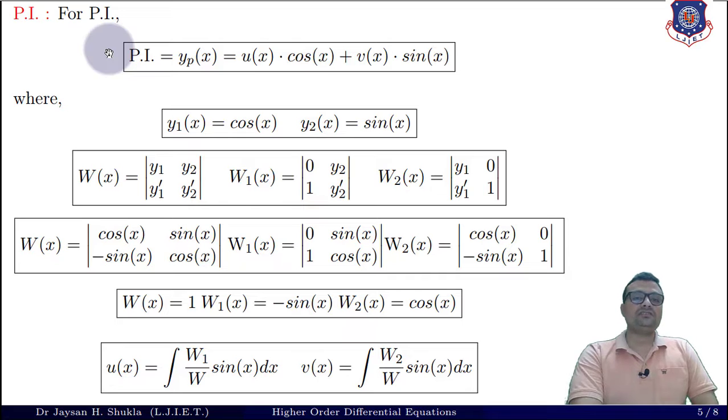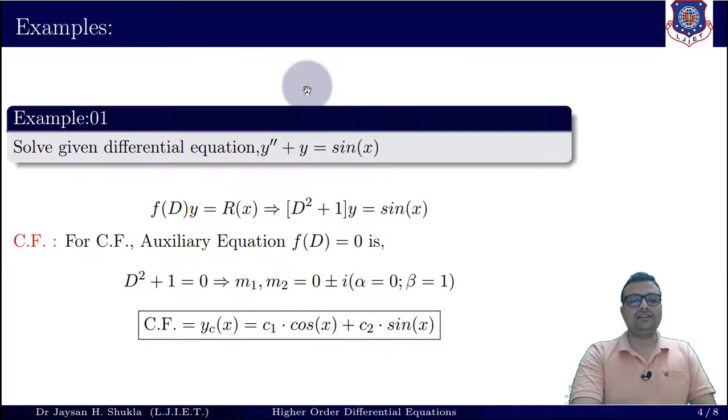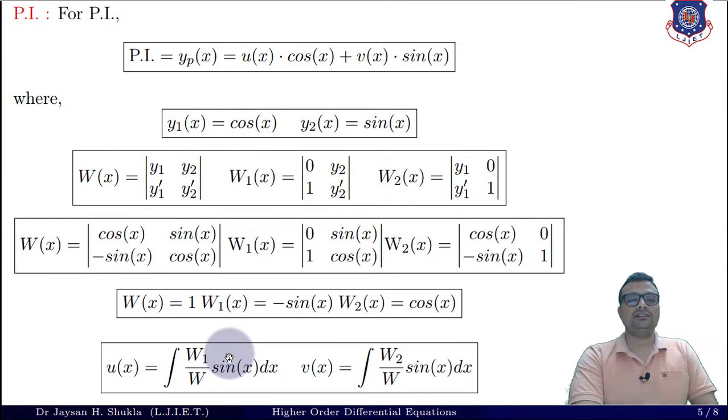This technique is almost similar to undetermined coefficients when it comes to framing the value of yₜ first. In undetermined coefficients we are framing the value of yₜ first and then solving those equations for a, b, c or d. Here again I am framing my value of yₜ first, but the change is here I am taking yc as yp. You can see what is the value of yc: it is c₁cos(x) + c₂sin(x). I am considering yc as yp, but in place of c₁ and c₂ I am taking arbitrary functions u(x) and v(x). The rest of the method is to identify u and v.